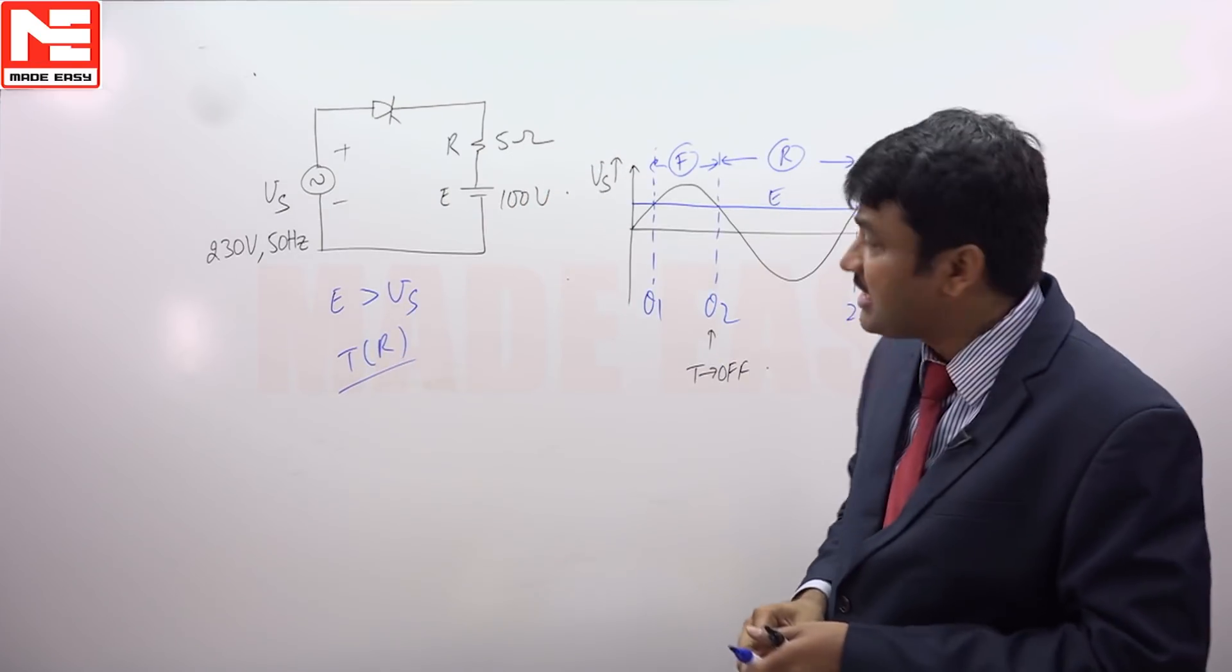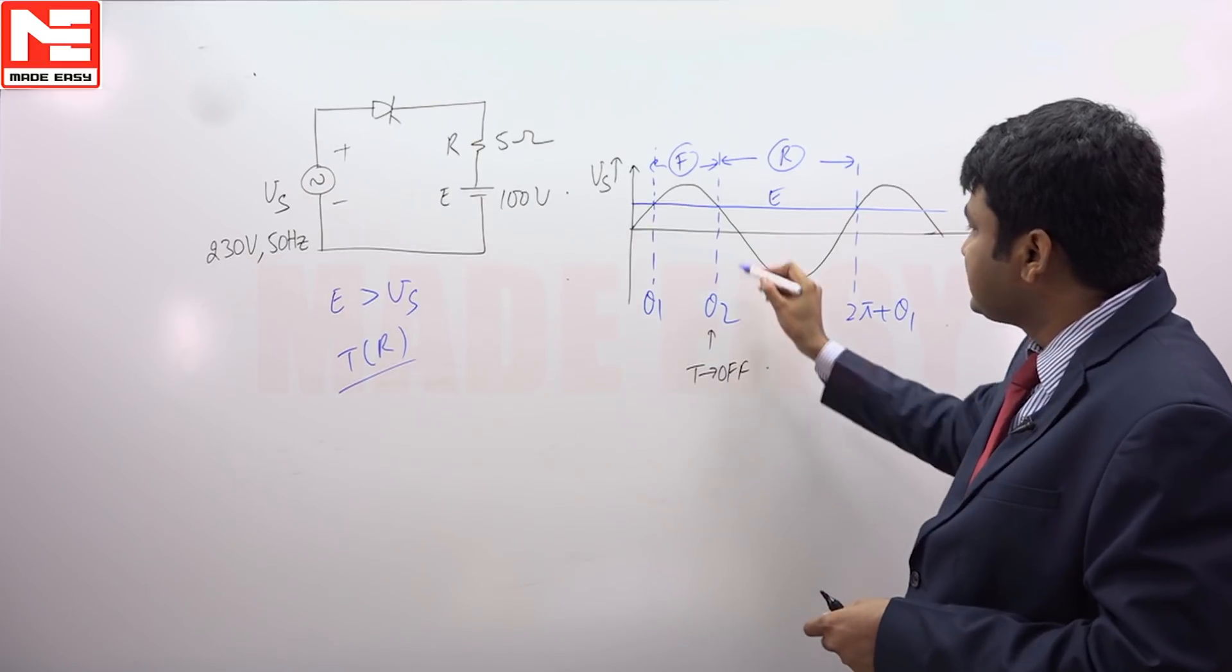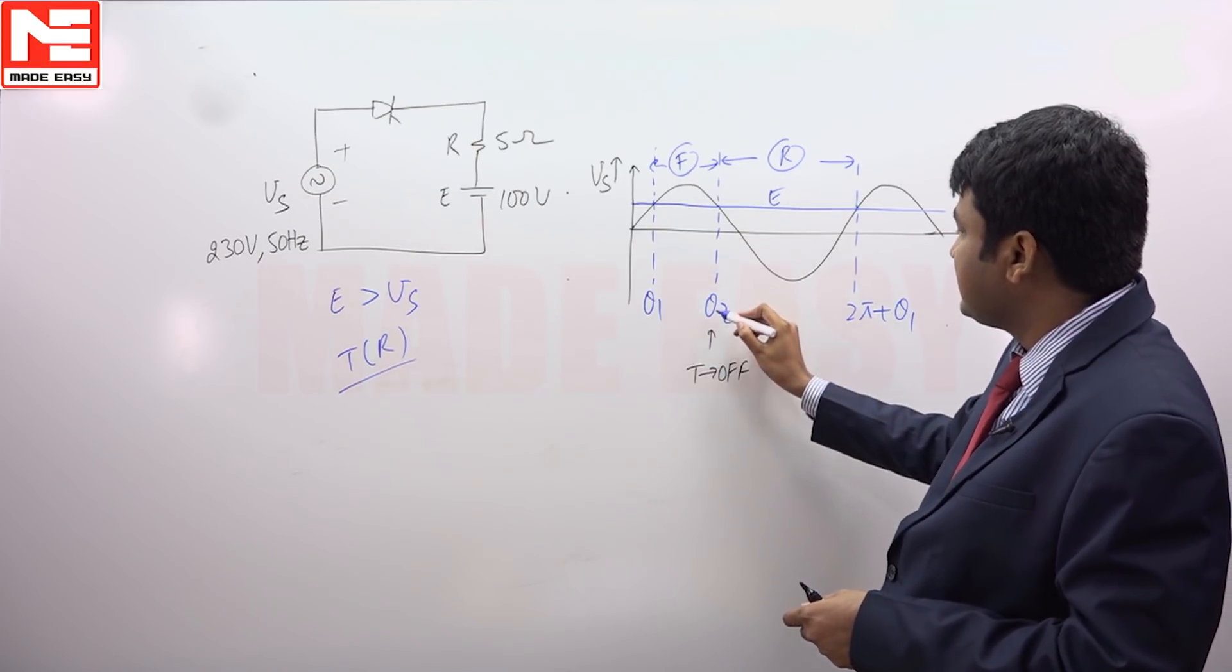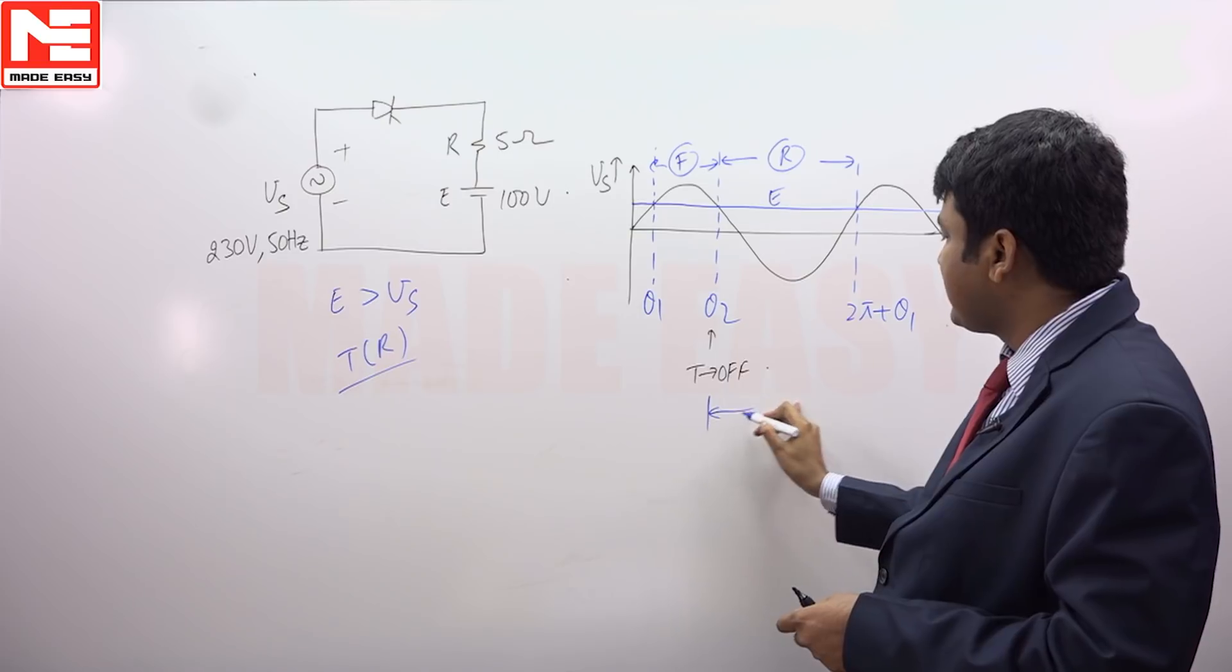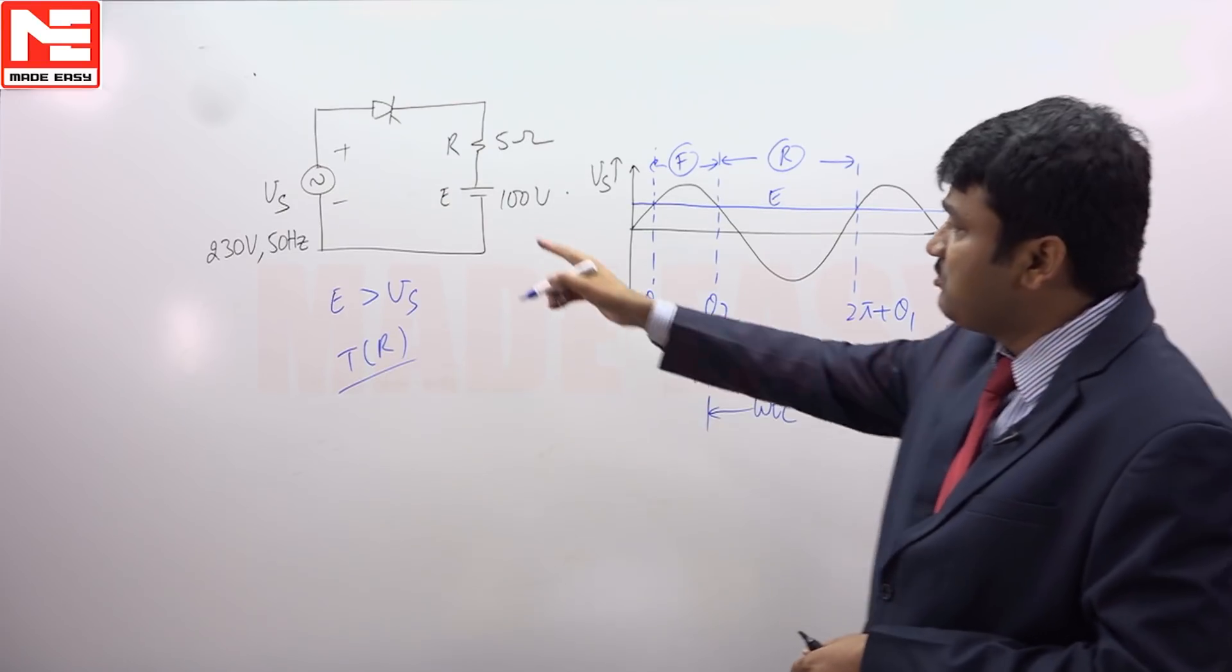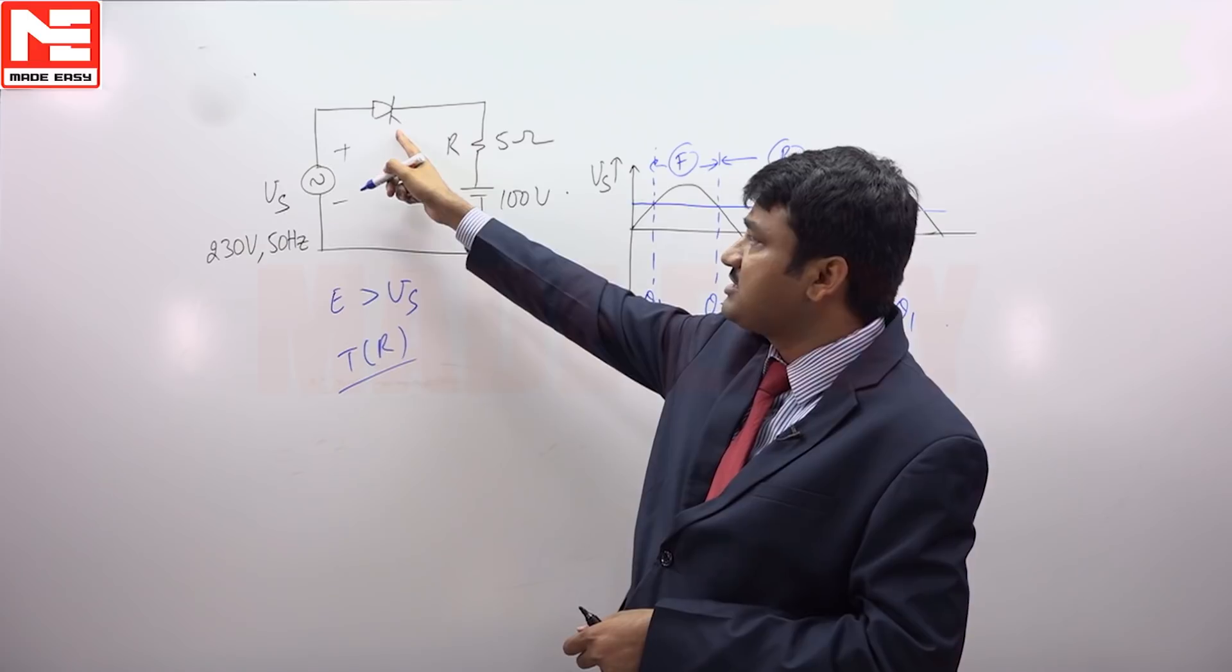So what is circuit turn off time? So in this case, thyristor stops at theta 2. So from theta 2, we have to find circuit turn off time. What is circuit turn off time? How much time reverse voltage is applied across the thyristor?